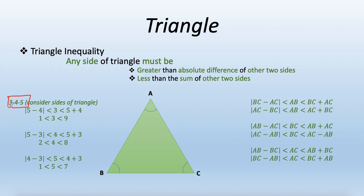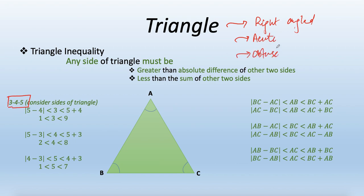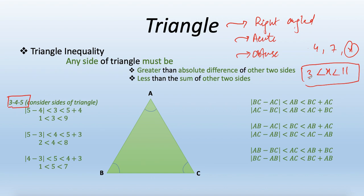This type of question often appears in quantitative comparison, where two sides are given and the third side is a variable. Based on this property, we can find the range of that variable. For example, if two sides are 4 and 7, and the third side is x, then x must be greater than 3 and less than 11. Additional constraints like right, acute, or obtuse may restrict the range further.